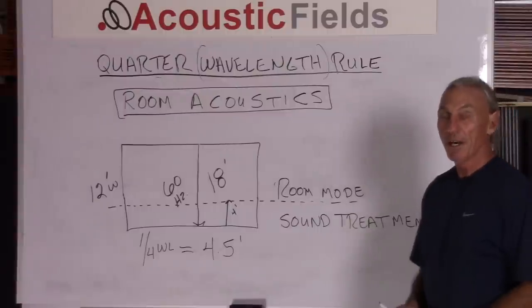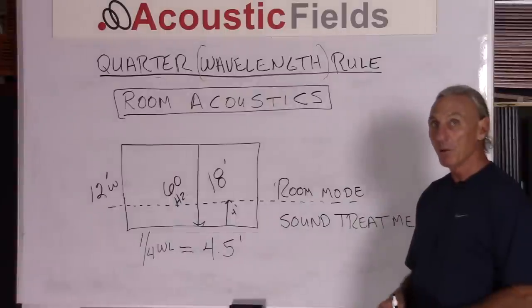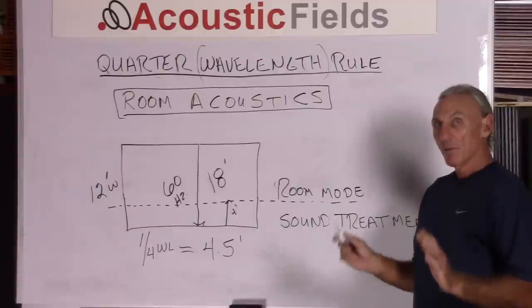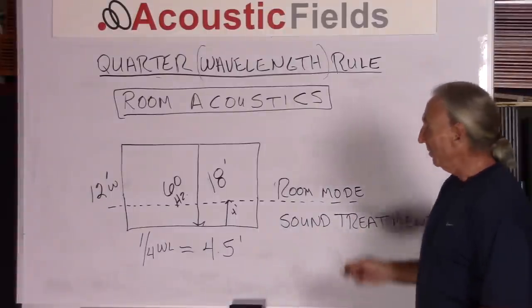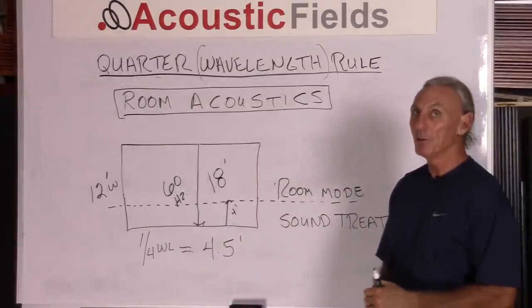Alright, we just calculated how to figure wavelength and then from wavelength get quarter wavelength obviously by just taking 25% of that. Now quarter wavelength rule is used mainly in acoustics and sound absorption technology. So let's use an example of how it fits into acoustics.